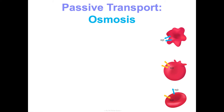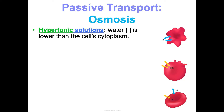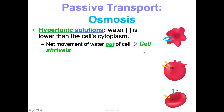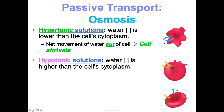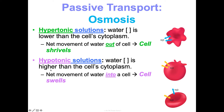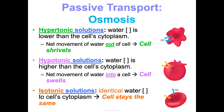All cells exist in extracellular fluid and can be in hypertonic, hypotonic, or isotonic solutions. In a hypertonic solution, the solution has a lower water concentration than the cell's cytoplasm, so water rushes out of the cell into the extracellular fluid and the cell shrivels up. In a hypotonic solution, water is more concentrated outside than inside, so water rushes in and the cell swells up — think hypo like a hippo. In an isotonic solution, water concentration is identical in and out, so water moves in and out equally and the cell stays the same size.